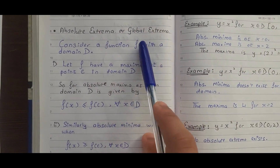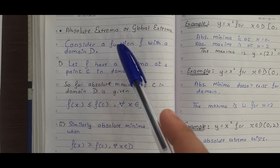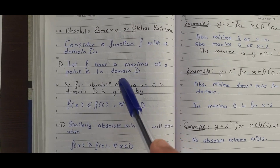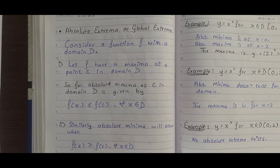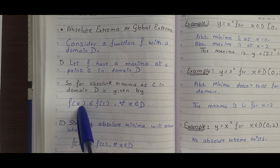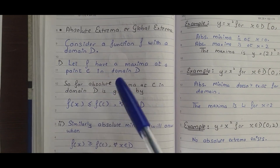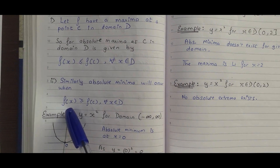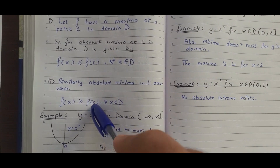Moving on to absolute or global extrema: consider a function F with a domain D, where D is the set of values of x for which we use the function. If F has a maximum at a point C in domain D, that is your maxima. For absolute maxima at C, the condition is that F(x) ≤ F(C) for all x in D. Similarly, absolute minima occur when F(x) ≥ F(C) for all x in D, meaning C gives the lowest value of F.